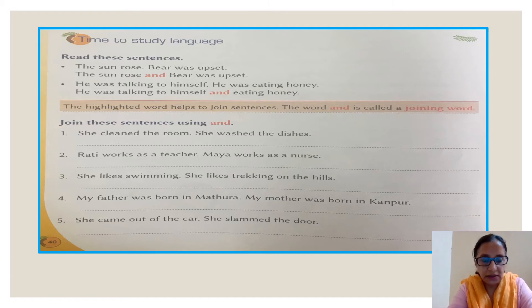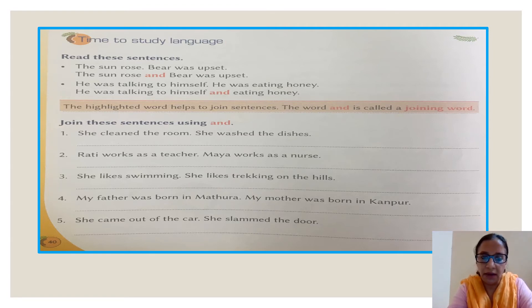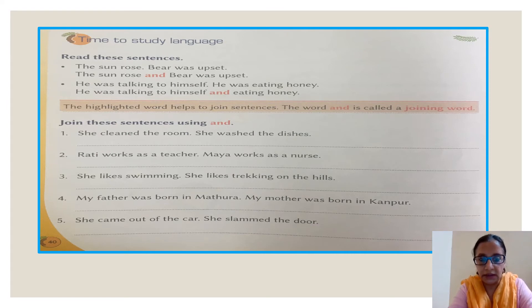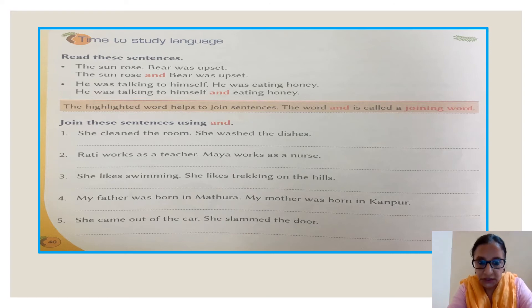Let's have a look at the exercise: join these sentences using and. We have two sentences given in each line, so we have to join them by removing the full stop and adding the joining word and. First: she cleaned the room. She washed the dishes. We will not put a full stop — instead we write and. She cleaned the room and washed the dishes.